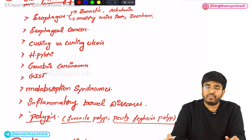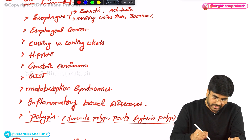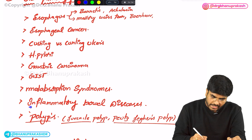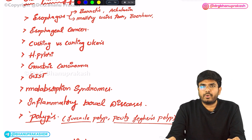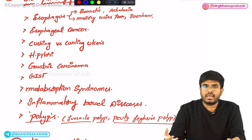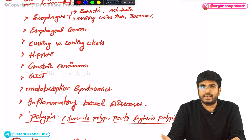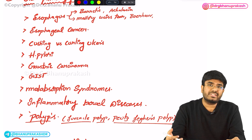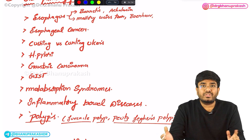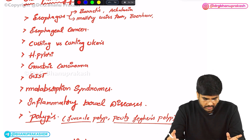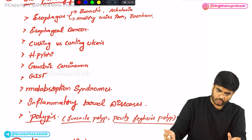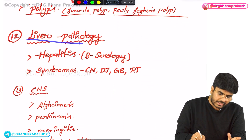In malabsorption syndromes, especially know Whipple's disease — it is very important. In inflammatory bowel diseases, know the differences between Crohn's disease and ulcerative colitis: the radiological appearance in Crohn's versus ulcerative colitis, creeping fat appearance, serpentine ulcer, continuous involvement, lead pipe appearance, transmural inflammation, granulomatous versus non-granulomatous. Every difference between Crohn's and ulcerative colitis is very important for the exam.